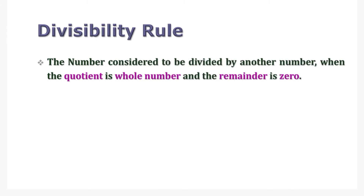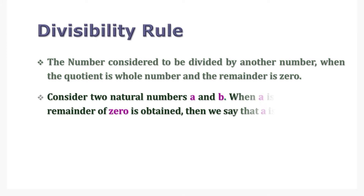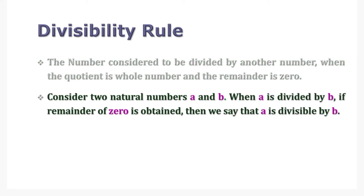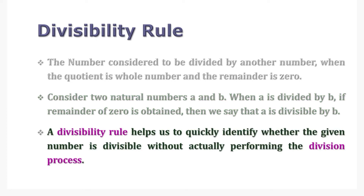A number is considered to be divided by another number when the quotient is a whole number and the remainder is zero. Consider two natural numbers A and B. When A is divided by B, if a remainder of zero is obtained, then we say that A is divisible by B. A divisibility rule helps us to quickly identify whether the given number is divisible without actually performing the division process.